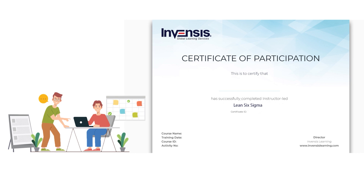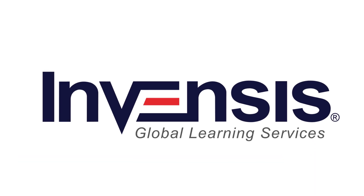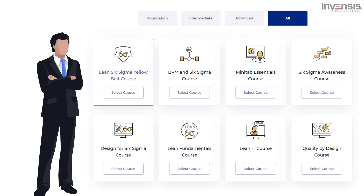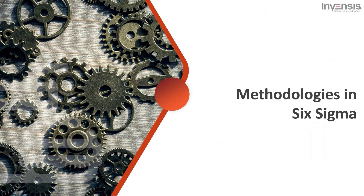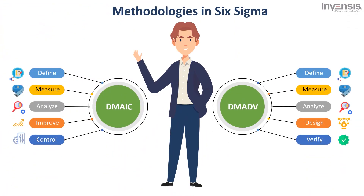Having a certification carries considerable weight in this competitive business community. It will give you an edge in obtaining career positions with some of the world's most respected companies. At Invensis Learning, we offer instructor-led live online Lean Six Sigma certification programs designed for working professionals with varying levels of Six Sigma experience. Six Sigma offers two types of improvement processes: DMAIC and DMADV, which are appropriate for two different situations.